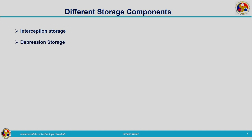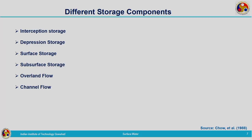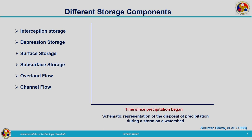We have seen different storage components: interception storage, depression storage, surface storage, subsurface storage, overland flow, and channel flow. This schematic is taken from Venti Chow's textbook on Applied Hydrology — a schematic representation of the disposal of precipitation during a storm on a watershed. Along the x-axis is time since the precipitation began, and along the y-axis is the rate relative to precipitation rate. Out of 100% of total rainfall, different contributions come towards different storages and different flow components.